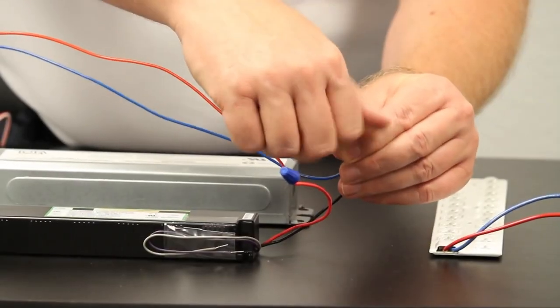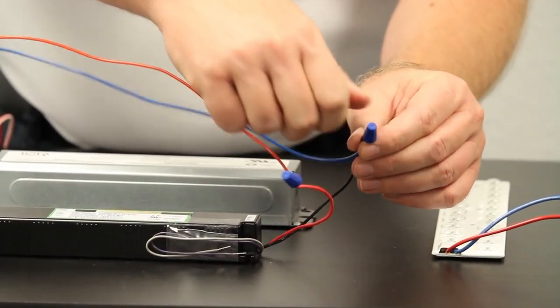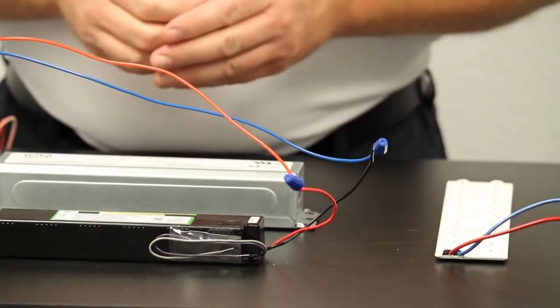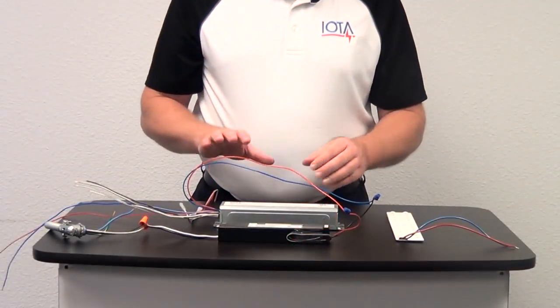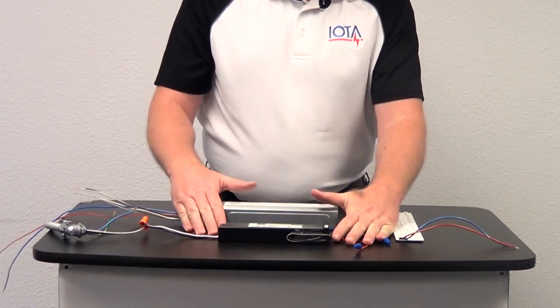Different manufacturers use different color wires for the output, so make sure to pay attention to the polarity as it's labeled on the driver. That completes the wiring from the ILBCP to the normal driver.